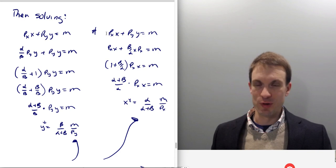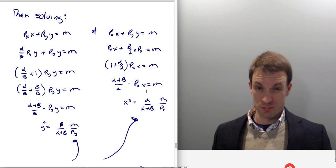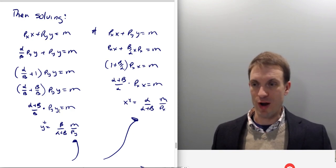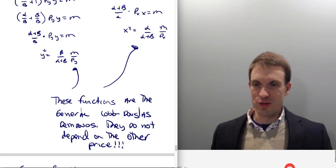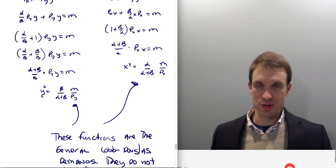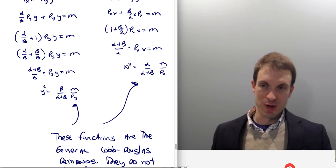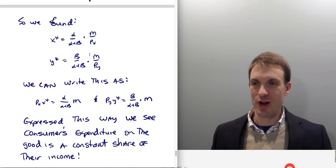Here's my generic Cobb-Douglas demand for good Y. And I did something similar over here for X. So you could stop the video and go back or pause the video and take a look at my work for X, the same as I did over here. So these functions are the generic Cobb-Douglas demands. And notice they do not depend on the price of the other good. Here's the demand for Y depends on income and the price of good Y. Here's my demand for X. It depends on income and the price of good X.